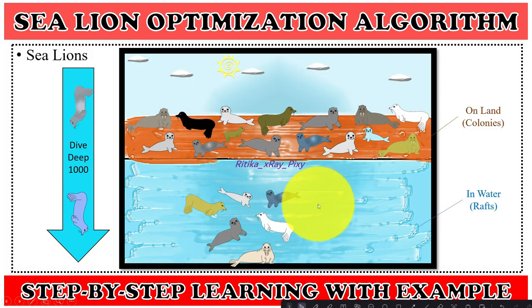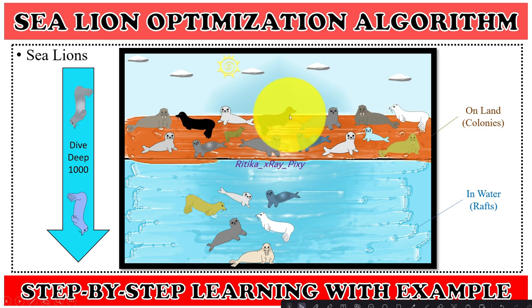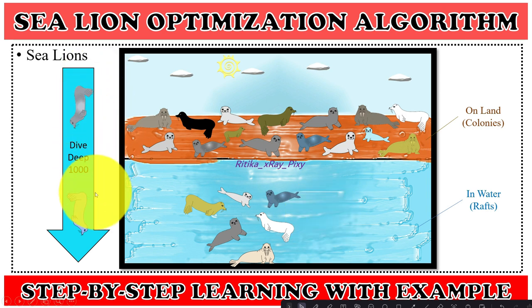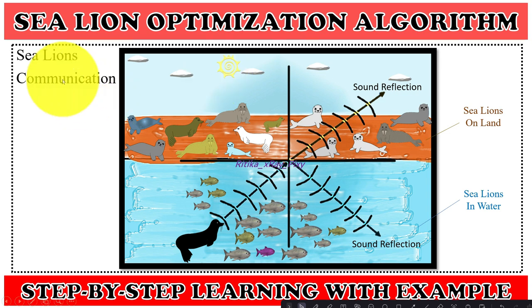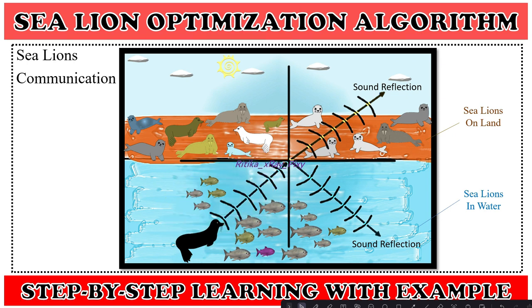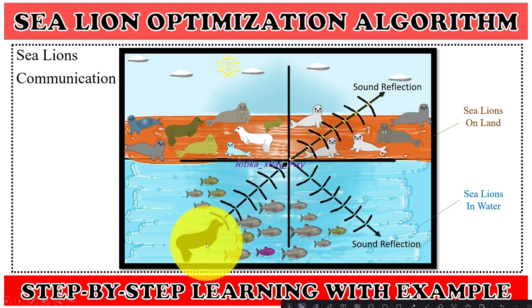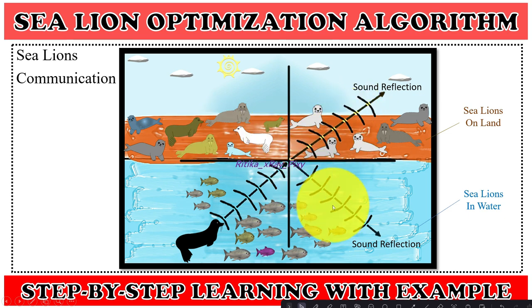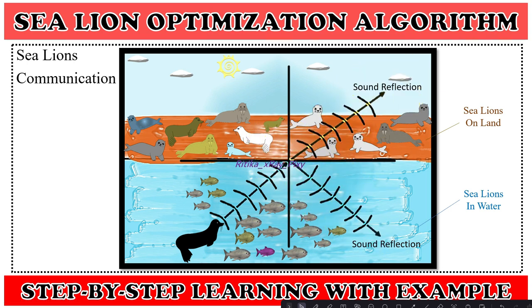Sea lions' speed is up to 30 miles per hour. They are highly intelligent and social creatures who live on both land and water. Groups on land are called colonies, and in water they are called rafts. Sea lions can dive up to 1000 feet and hold their breath for around 8 to 20 minutes. They communicate with each other during group hunting using a variety of vocalizations and also use their whiskers to detect target position and size. When any sea lion traces plenty of food, it calls other members to join using sound — sound travels four times faster in water than in air.